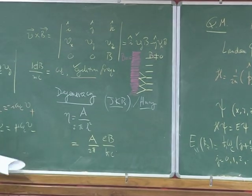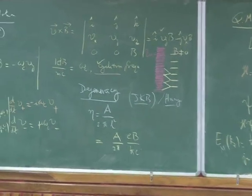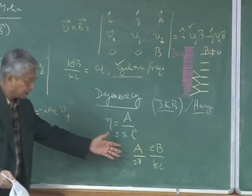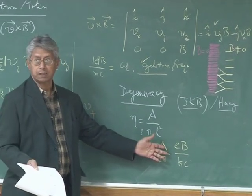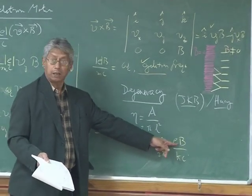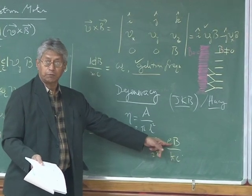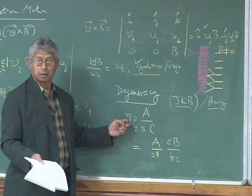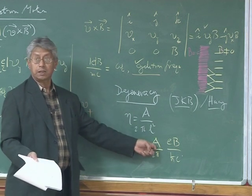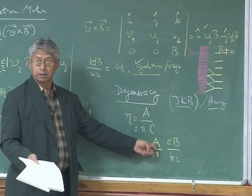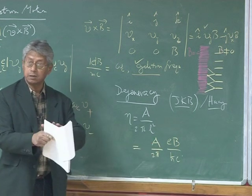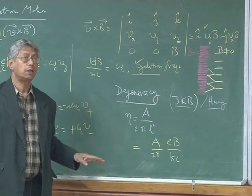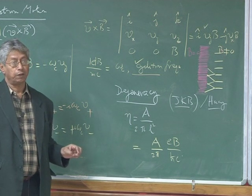So this is an answer you find in many books. This mathematically re-expresses what we were saying before. Because if I now jack up my magnetic field, then the degeneracy increases. If I also increase the area, the degeneracy increases. So the degeneracy depends on the size of the system and also on the strength of the magnetic field.